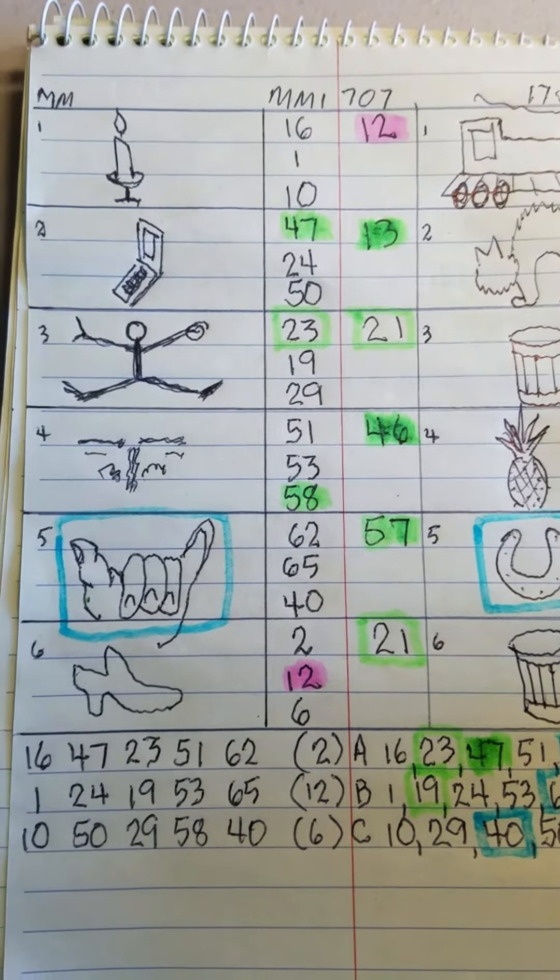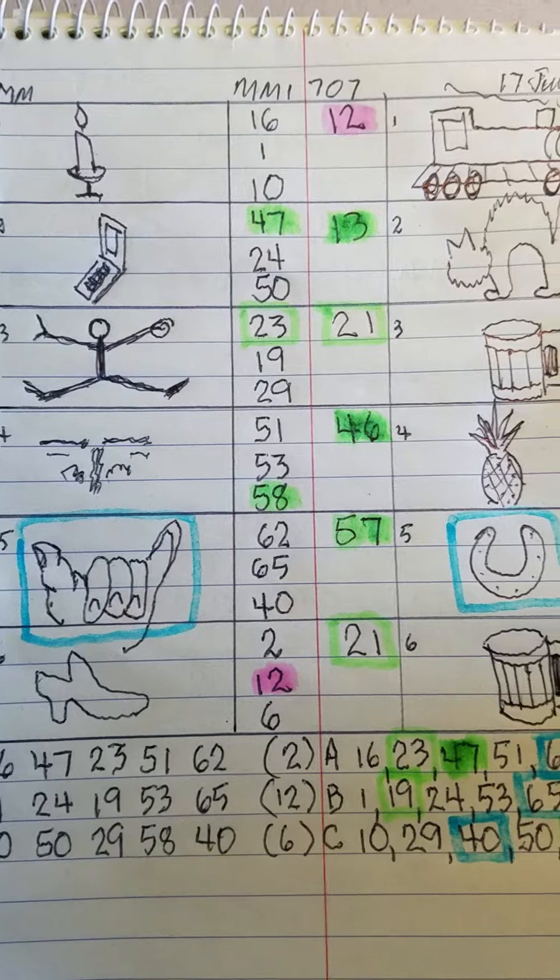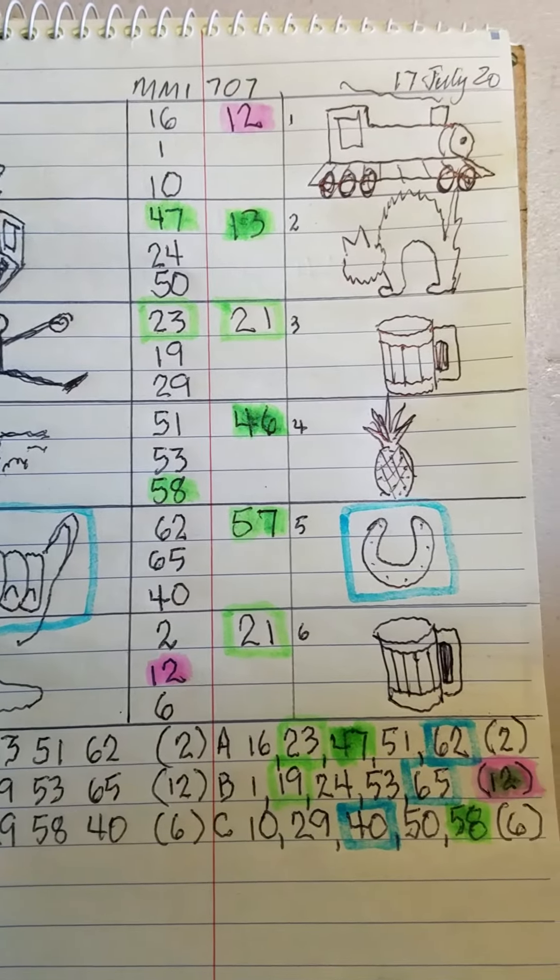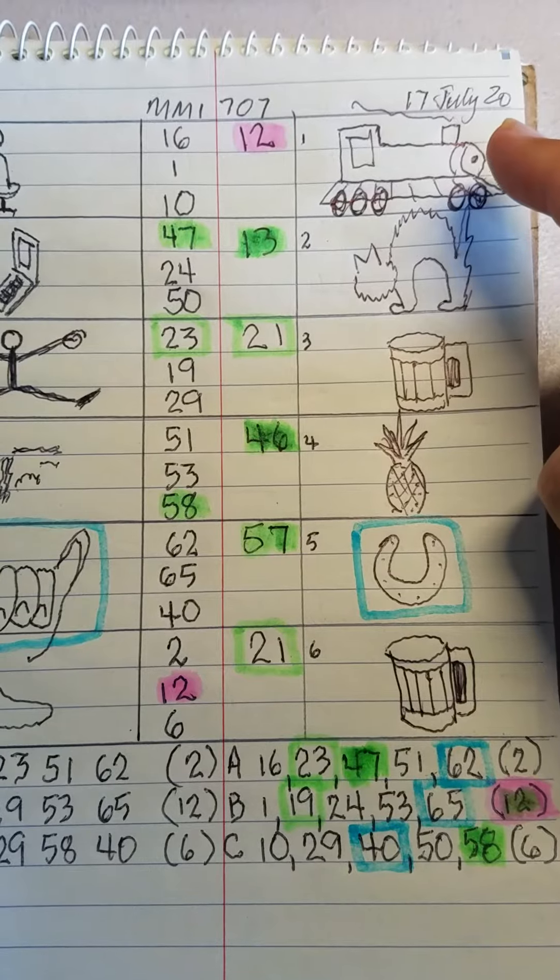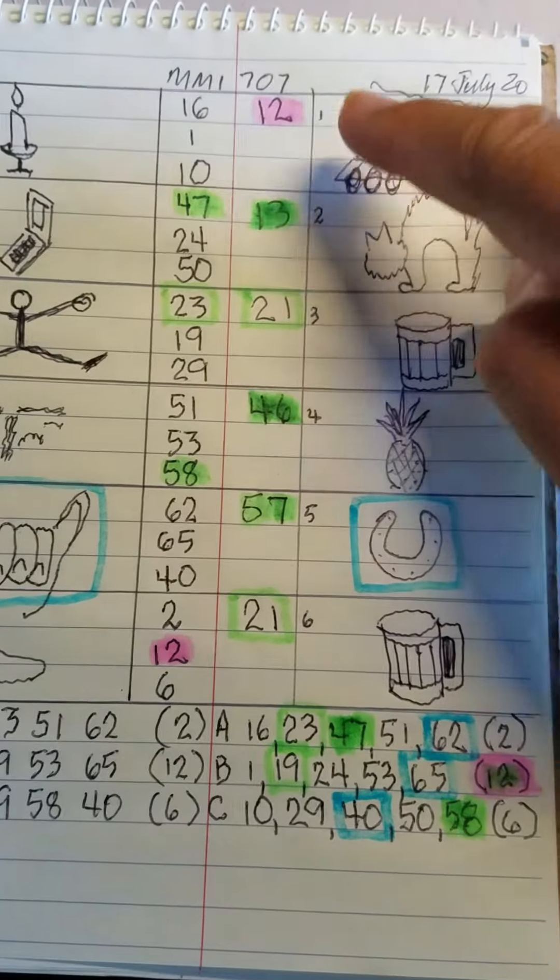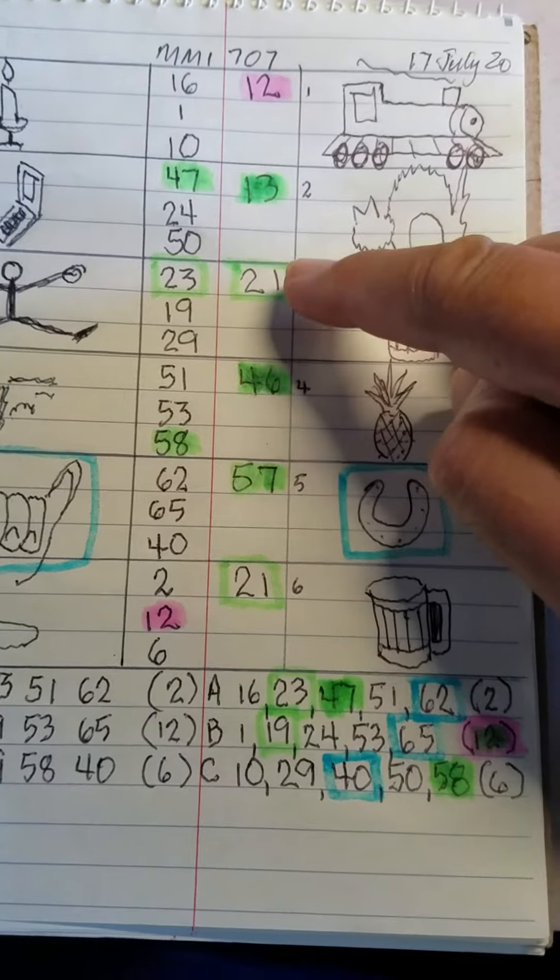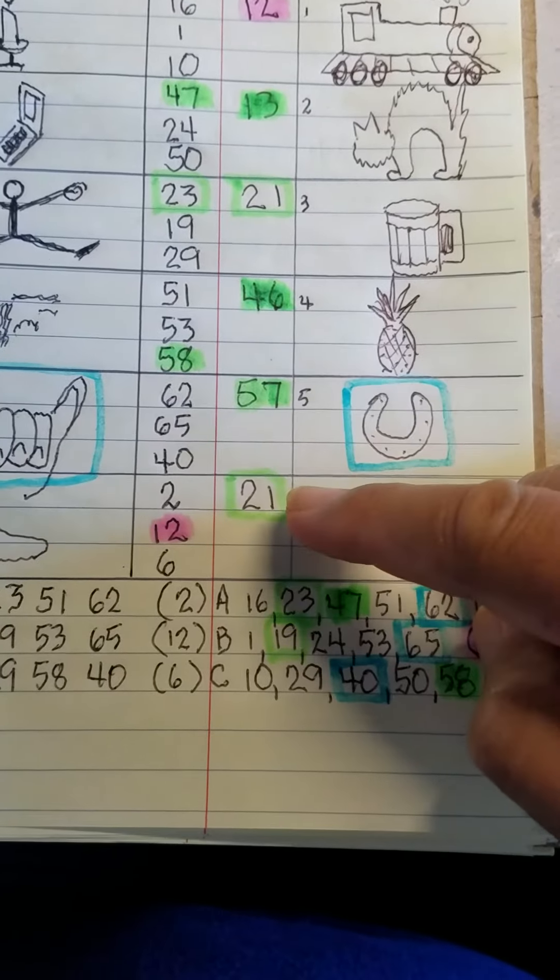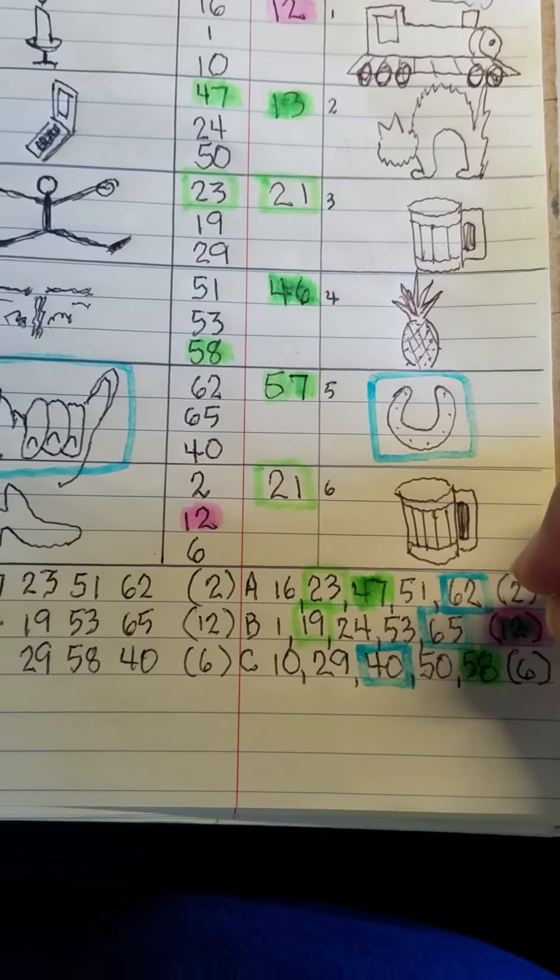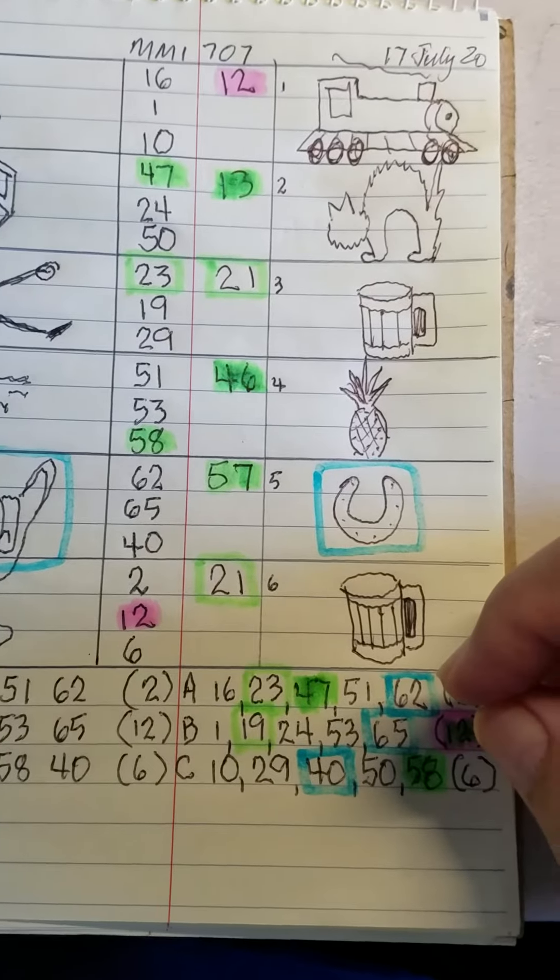Okay, this is feedback for the Mega Millions which was just drawn on the 17th of July 2020. The numbers that were drawn today were 12, 13, 21, 46, 57, and 21. Looking at the numbers that hit was...